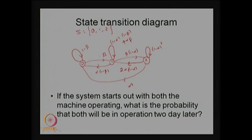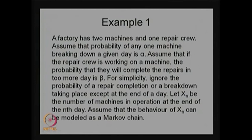Now the question is: if the system starts out with both machines operating, what is the probability that both will be in operation two days later? Recall that the random variable Xn denotes the number of machines in operation at the end of the nth day.